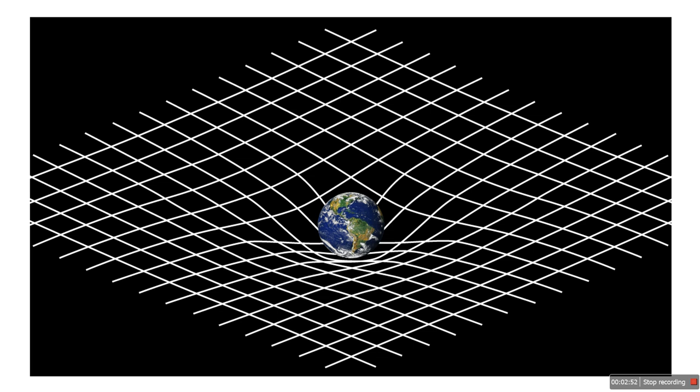Einstein's theory sounded radical but it has been confirmed many times. In 1919, scientists observed star light bending around the sun during a solar eclipse, just as Einstein predicted. Even GPS satellites have to account for general relativity because time moves faster in weaker gravity or higher in space than on Earth's surface.